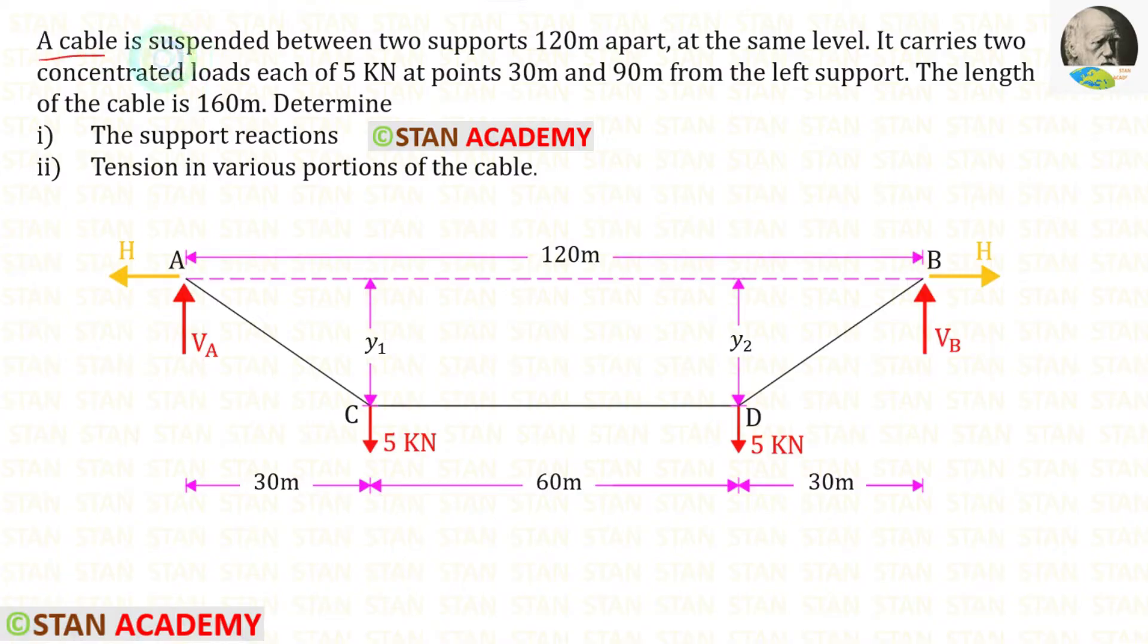A cable is suspended between two supports 120 meters apart at the same level. Let us keep the left side support as A and the right side support as B. Both of the supports are in the same level. The span of the cable is given as 120 meters.